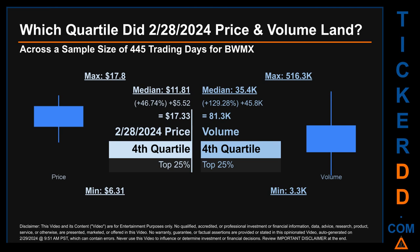Hello, my name is Maria. Which quartile did February 28th, 2024 price and volume land in, across a sample size of 445 trading days? The maximum end-of-day price for BWMX was $17.80, while the minimum was $6.31. February 28th, 2024 price of $17.33 landed within the fourth quartile, meaning it was within the top 25% of all sampled end-of-day prices. The day's volume also landed within the fourth quartile, within the top 25% of all sampled daily volume.